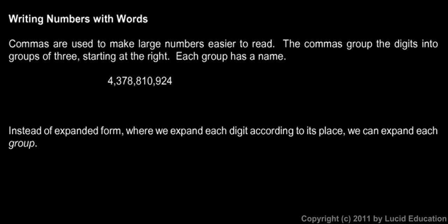Now we're going to talk about writing numbers with words, actually using English words to write out numbers. First we need to understand the commas. You see the commas in this number. The commas are used to make a very large number a lot easier to read. They group the digits into groups of three starting over here at the right. So you have three digits on the right and then a comma, three more digits and then a comma, and as many different groups as you need.